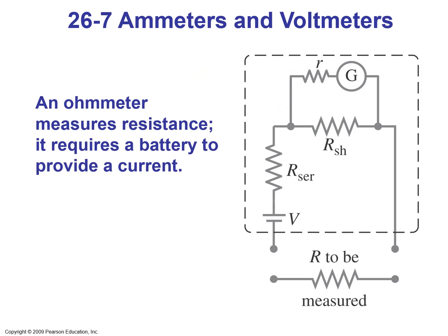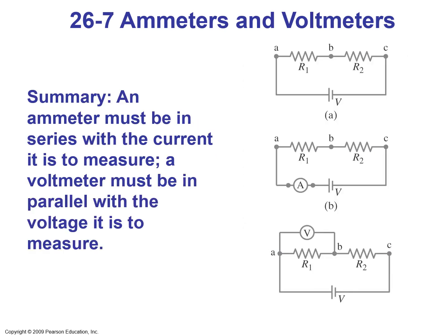An ohmmeter measures resistance and requires a battery to provide a current. It is composed of a battery with internal resistance, a shunt resistance, and a galvanometer attached to the two terminals of a resistor to be measured. An ammeter must be in series with the current it measures, while a voltmeter must be connected in parallel with the element whose voltage is to be measured.